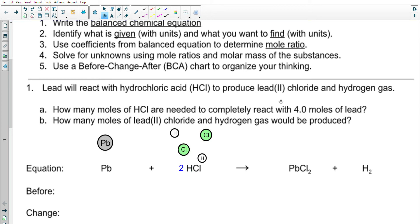Next we want to look at what is given and what we want to find. Part (a) asks: how many moles of HCl are needed to completely react with 4.0 moles of lead? That 4.0 moles of lead is what we are given, and what we're trying to find is how many moles of HCl would be required. We'd also like to know how many moles of lead chloride and hydrogen gas would be produced, looking at both the reactant and product quantities.